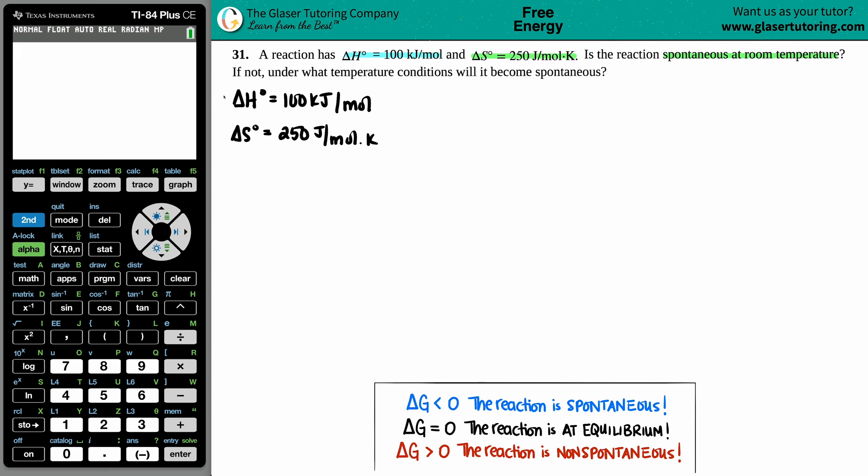When they give you delta H values and delta S values and they're asking for something that is spontaneous, there's only one unit that we can find in which to know if something is spontaneous or not given these values. H is enthalpy, the amount of heat being produced. Delta S is entropy, the randomness of the molecules. When we're talking about spontaneity, we're talking about a delta G value.